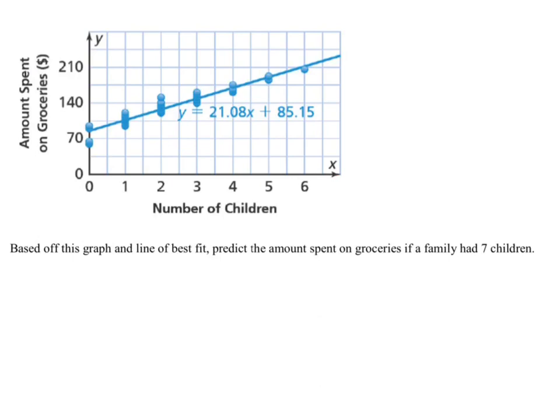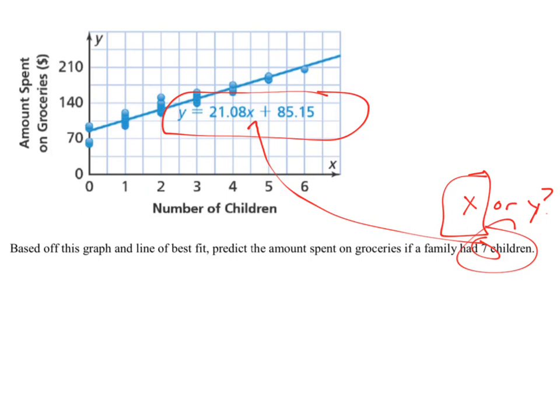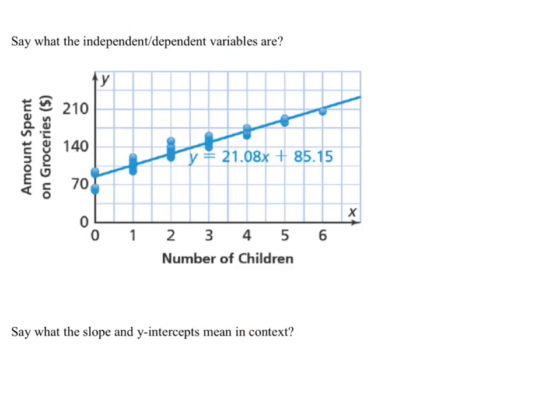You need to be able to make a prediction using a line of best fit. So, let's say you had this line of best fit. You had to get the amount spent on groceries given some number of children. Well, let's say they had seven children. You need to know if this is X or Y, and this one's going to be an X value, right, number of children. So, you got to take this seven and put it in your equation there and be able to put that in your calculator, right? 21.08 times seven and then plus, plus 85.50. And you put that calculator in calculating and get the amount spent on groceries, approximate.